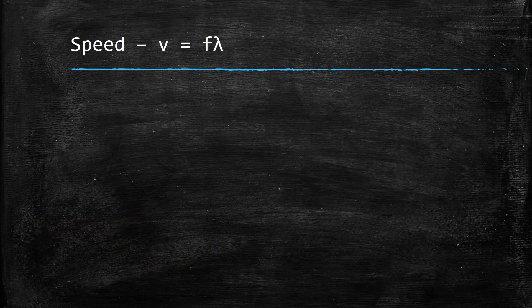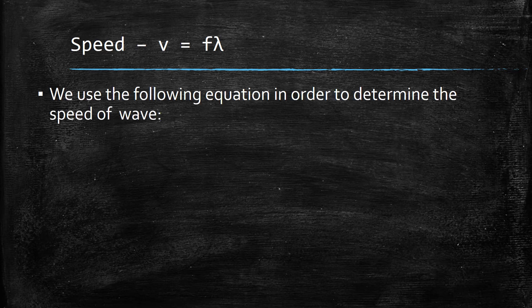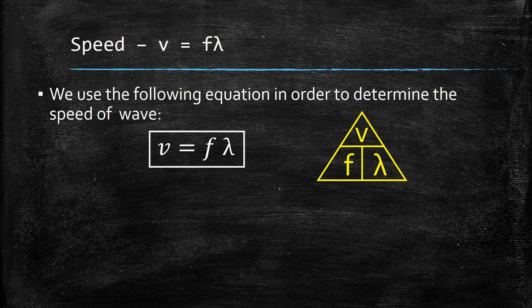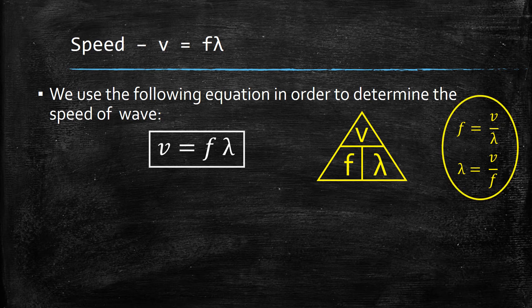The speed V is equal to F times lambda — this is the wave equation. We use this equation to determine the speed of a wave. This equation appears on the relationship sheet, so we put it into a rectangle. It may also be useful to put this into a triangle in order to rearrange it, because we use the rearranged equations quite often. Rearranging: F is equal to V over lambda, and lambda is equal to V over F. These don't appear on the relationship sheet, but they're really useful to note.